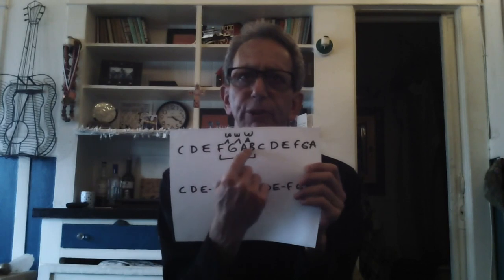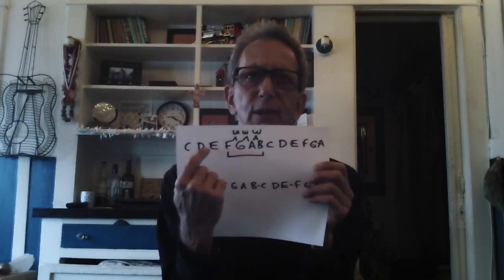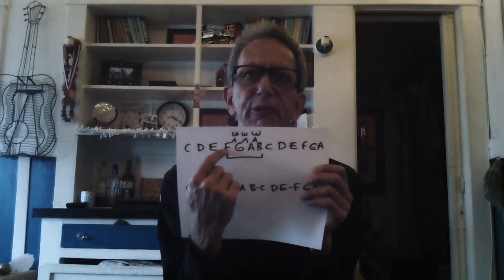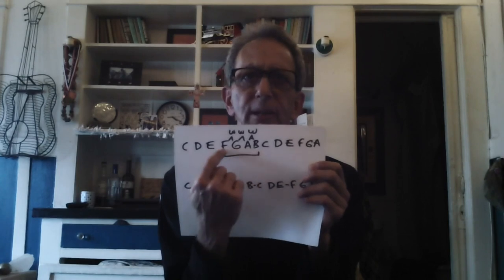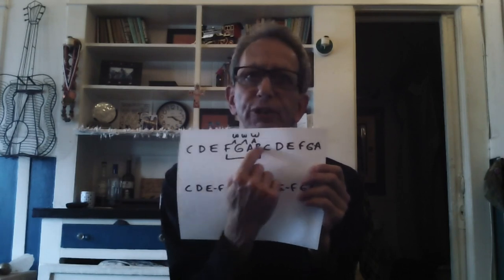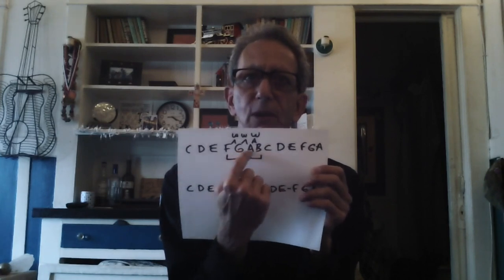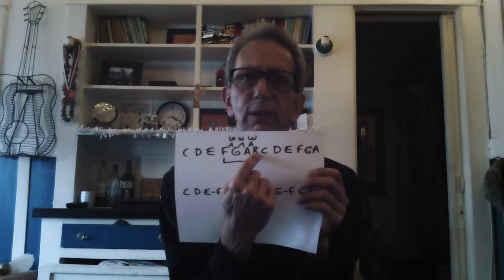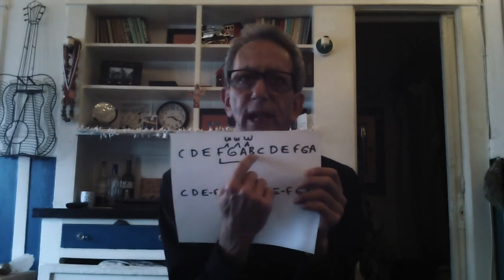Let's look at this not just as three whole steps but in terms of step count — it's four steps, so it's a fourth. But this particular fourth is three whole steps — an augmented fourth. If I go C to F: whole, half, whole — that's two and a half, not three. D to G: whole, half, whole — two and a half. E to A: half, whole, whole — two and a half. F to B: whole, whole, whole — three whole steps. G to C, A to D, B to E — all two and a half. Everything else is a perfect fourth; the tritone is a sharp four, a raised fourth, three whole steps.